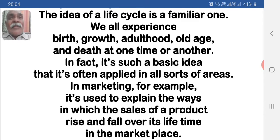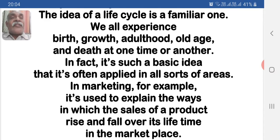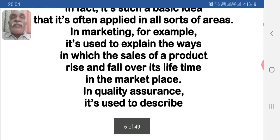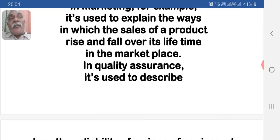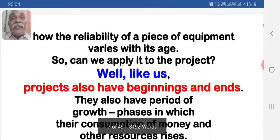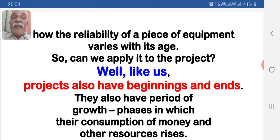In human life, there is birth, growth, adulthood, old age, and death. In fact, it's such a basic idea that it's often applied in all sorts of areas. In marketing, for example, it's used to explain the way in which the sales of a product rise and fall over its lifetime in the marketplace. In quality assurance, it's used to describe how the reliability of a piece of equipment varies with its age. So can we apply it to the project? Like us, projects also have beginnings and ends.